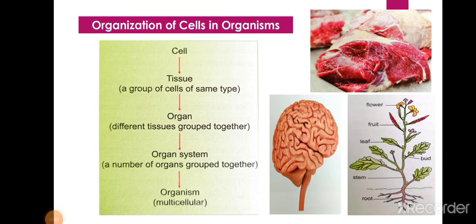Now the next topic is the organization of cells in organisms. In your previous classes you have studied that cells group together to make tissues, tissues form organs, organs form organ systems, and these finally lead to making any organism.